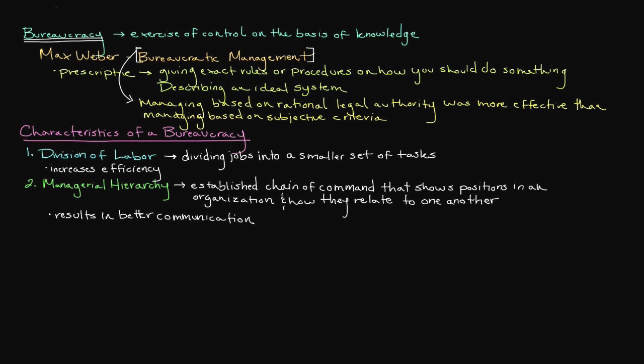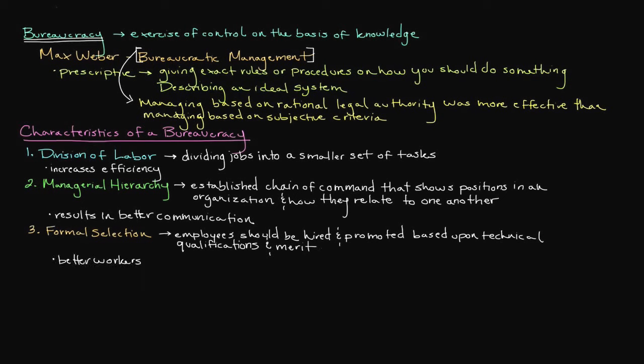The third characteristic of a bureaucracy is formal selection. In response to the presence of favoritism and nepotism in traditional systems, Weber believed that ideal bureaucracy was one that should select employees based upon technical qualifications. Really, isn't that how employees should be selected? Isn't it in the best interest of the organization to have the most knowledgeable, most experienced, and most skilled workers at all levels of the organization? By hiring and promoting employees based upon merit, you not only benefit the organization by having the best workers available, but you also reward workers by recognizing them for their efforts.